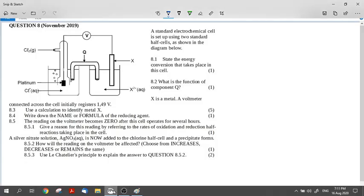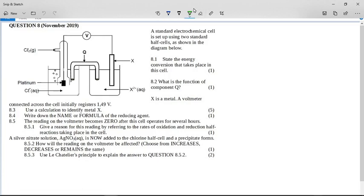Okay, this is the electrochemistry question from November 2019. If you look at this question, you can immediately see we have a salt bridge here and a voltmeter, both of which tell me that this is a galvanic cell which is producing a current rather than using a current to split a chemical compound.